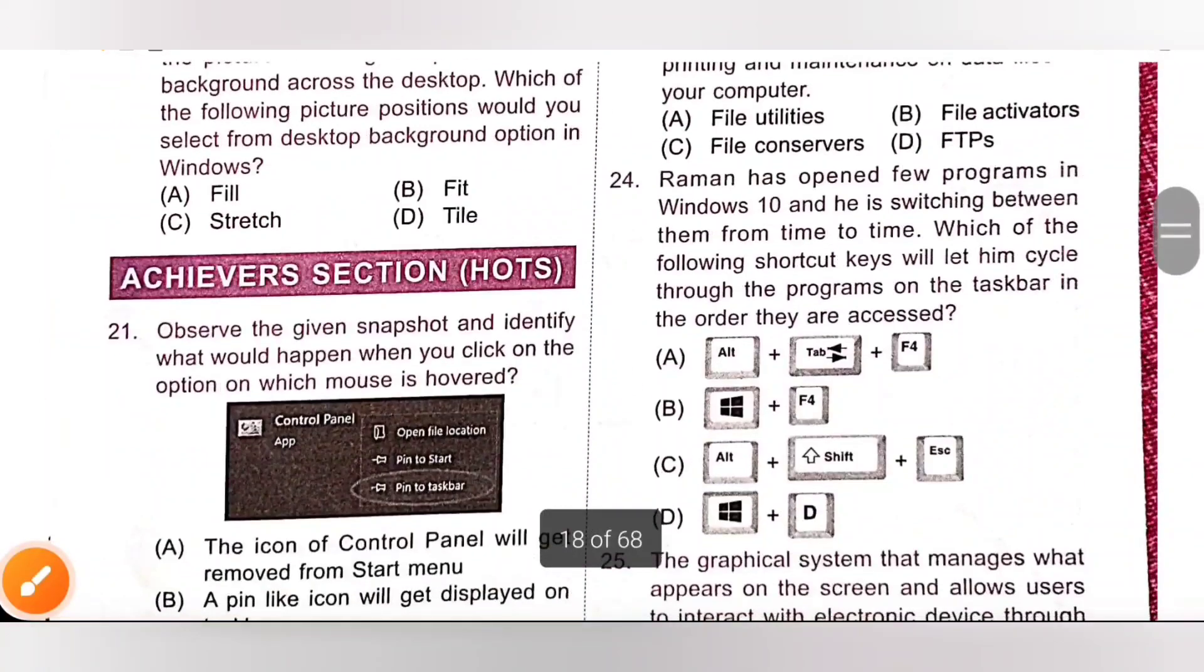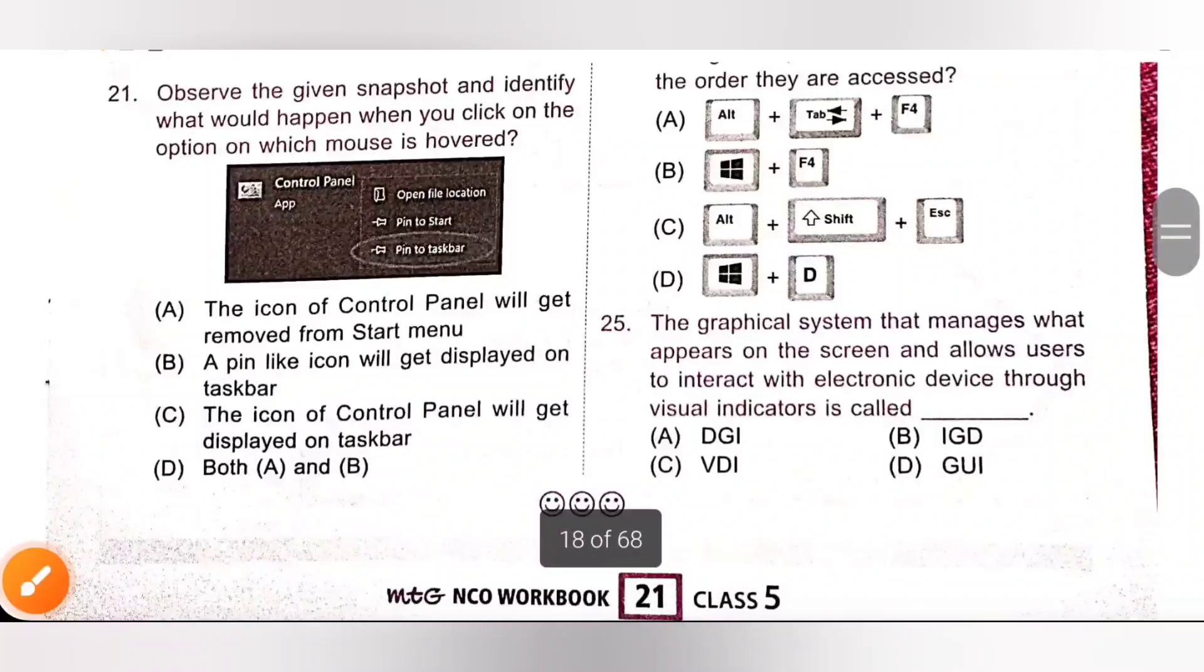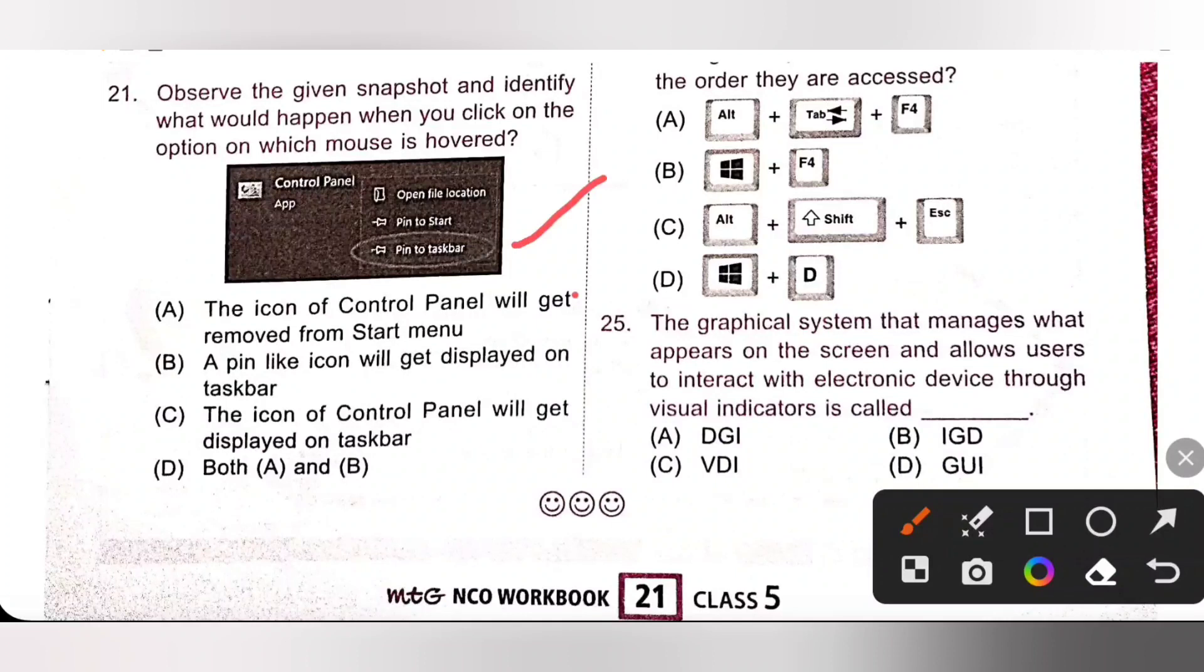Next, Achiever section 21. Observe the given snapshot and identify what would happen when you click on the option on which mouse is hovered. Option A, the icon of control panel will get removed from start menu, no.